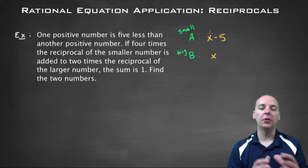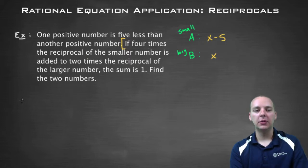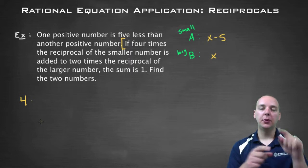Alright, so the next thing we want to do is take those quantities and try to write some equation based off of those values. So that's what the next sentence says, it says starting here, if four times the reciprocal, so let me try that, four times the reciprocal.